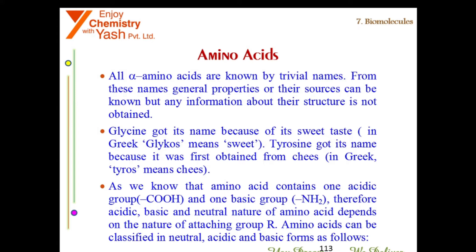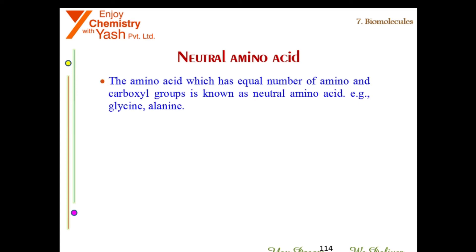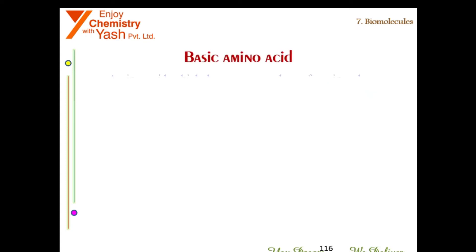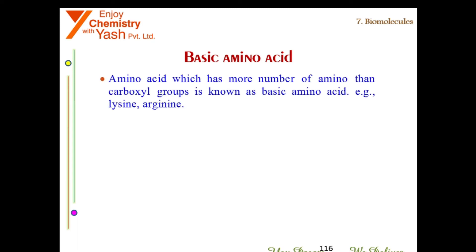Since an amino acid contains one acidic group (COOH) and one basic group (NH2), the acidic, basic, or neutral nature of amino acids depends on the nature of the attached R group. Neutral amino acids have an equal number of amino and carboxyl groups — examples are glycine and alanine. Acidic amino acids have more carboxyl groups than amino groups — examples are aspartic acid and glutamic acid. Basic amino acids have more amino groups than carboxyl groups — examples are lysine and arginine.